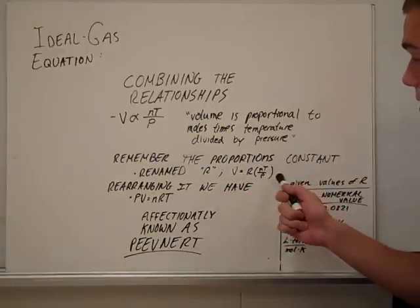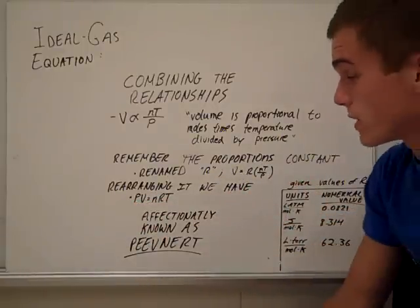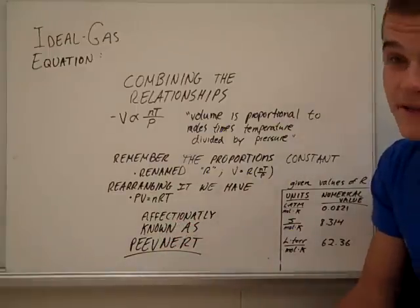So V equals RNT over P. Rearranging it, we get PV equals NRT. Affectionately known as PVNert.